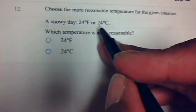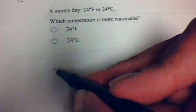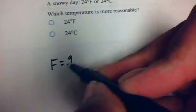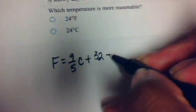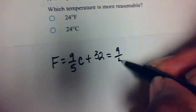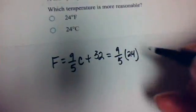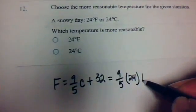Now you probably already know what the answer is by now, but if you want to convert 24 degrees Celsius to Fahrenheit, using this formula F equals 9/5 C plus 32, we can do 9/5 times C, which is 24, plus 32.